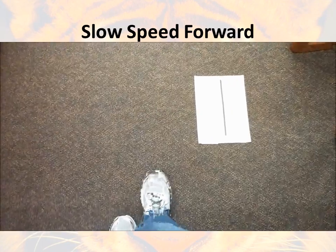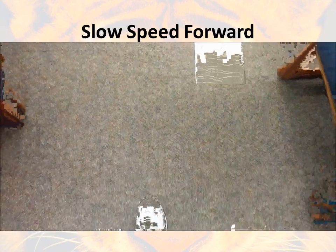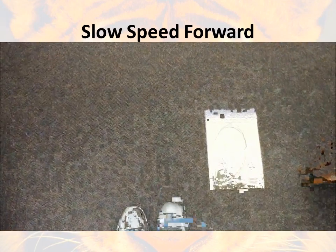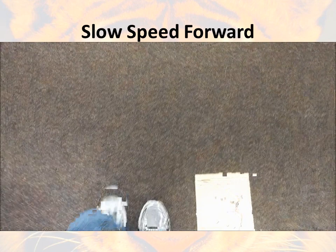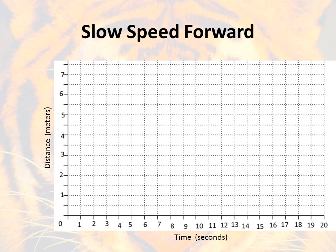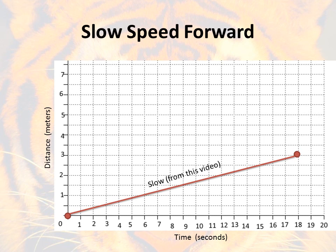Let's try one where I'm going slow forward. I start at zero, but I'm moving very slowly — at about five seconds I'm only at one meter, and at about ten seconds I'm barely up to two meters. It was almost 18 seconds for me to get to three meters. Once again I started at zero, so I put that dot there. Eighteen seconds later I had only gone three meters. That's my slow graph.